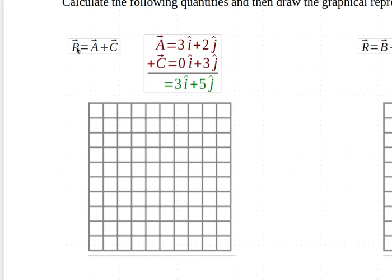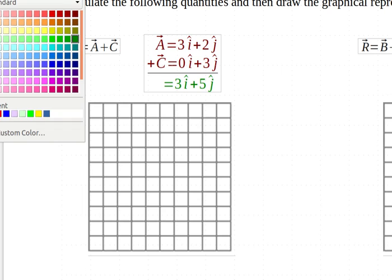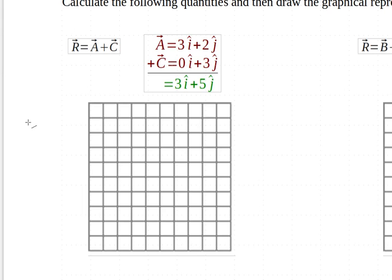So our resultant vector, and they use the R a lot for resultant not that you have to do that, is 3i plus 5j. Now graphically I could just draw this now that I know what it is and let's see I think I'll choose a nice purple color here. This means I go 3 to the right and 5 upwards. 1 2 3 to the right and 1 2 3 4 5 upwards.